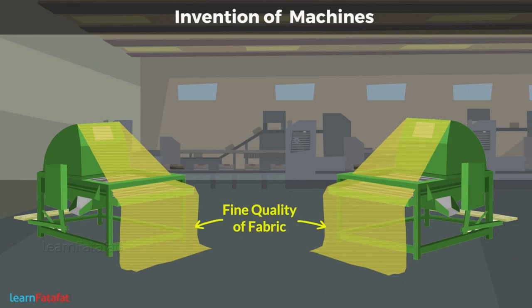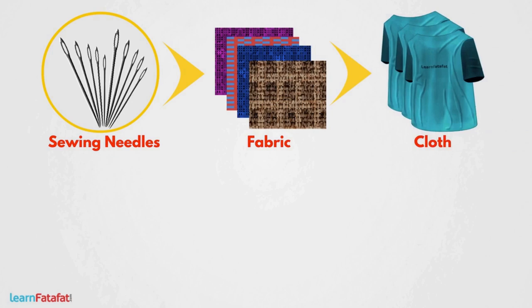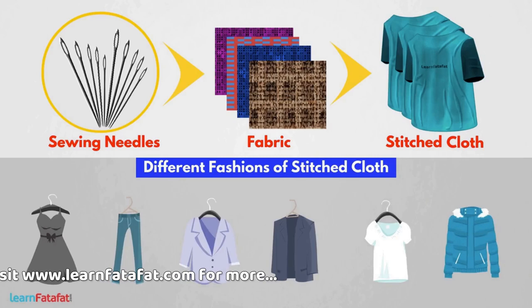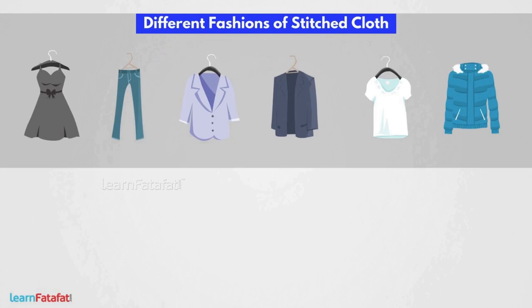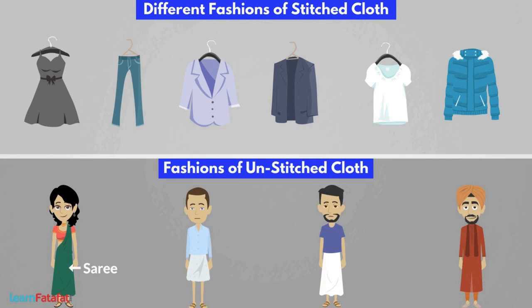In earlier days, people used to wrap fabric around their body. Later, sewing needles were invented with which stitching fabric into clothes began. The method and tools of stitching improved over time. Stitched clothes gained popularity and different fashions came into existence. Even though there are a variety of stitched clothes available today, the popularity of unstitched fabric — for example, saree, dhoti, lungi or turban — remains the same.